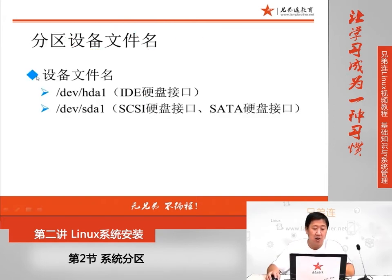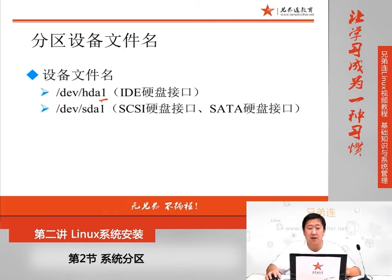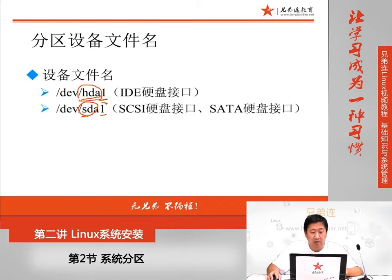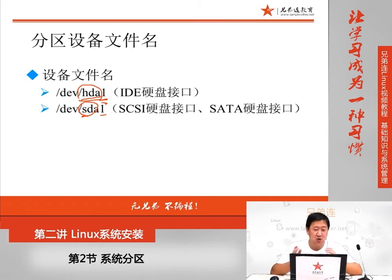硬盘有了文件名，还要给分区也分配文件名。分区文件名是这样的：在硬盘文件名后面直接加分区号。hda代表IDE硬盘接口的第一块硬盘，sda代表SCSI硬盘接口的第一个硬盘。那么sda1就代表这个硬盘当中的第一个分区，第二个分区就应该是sda2，第三个分区就应该是sda3。换句话说，分区的设备文件名就是在硬盘的设备文件名之后加入数字。